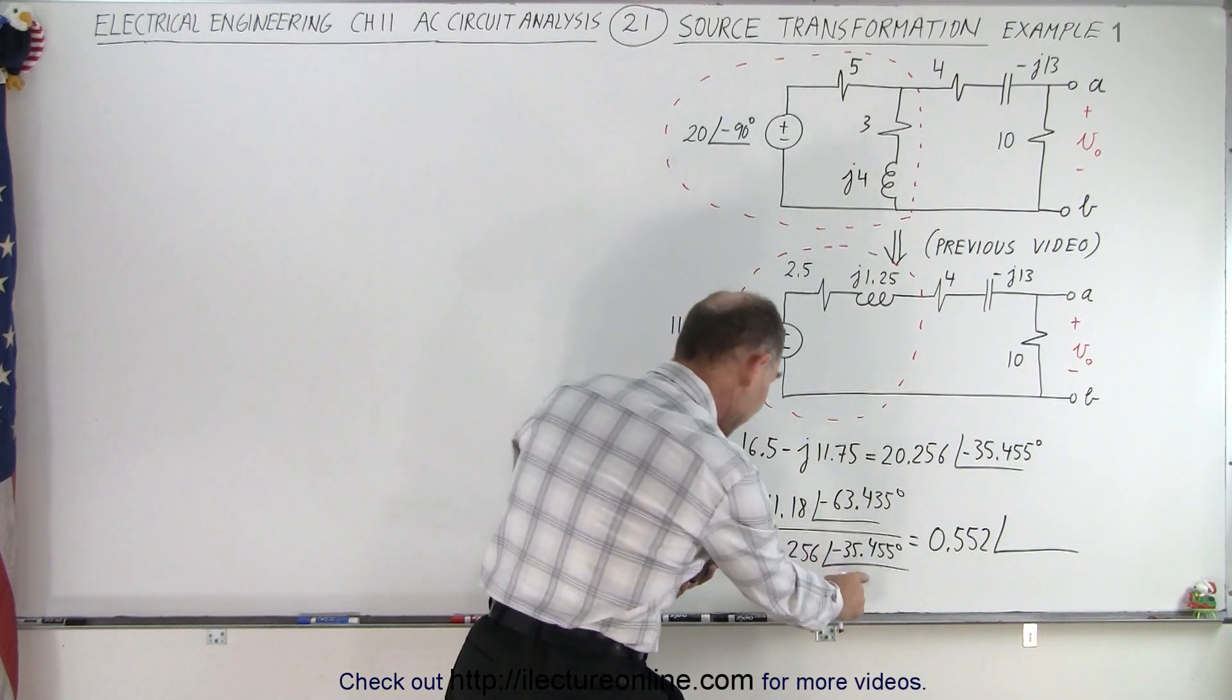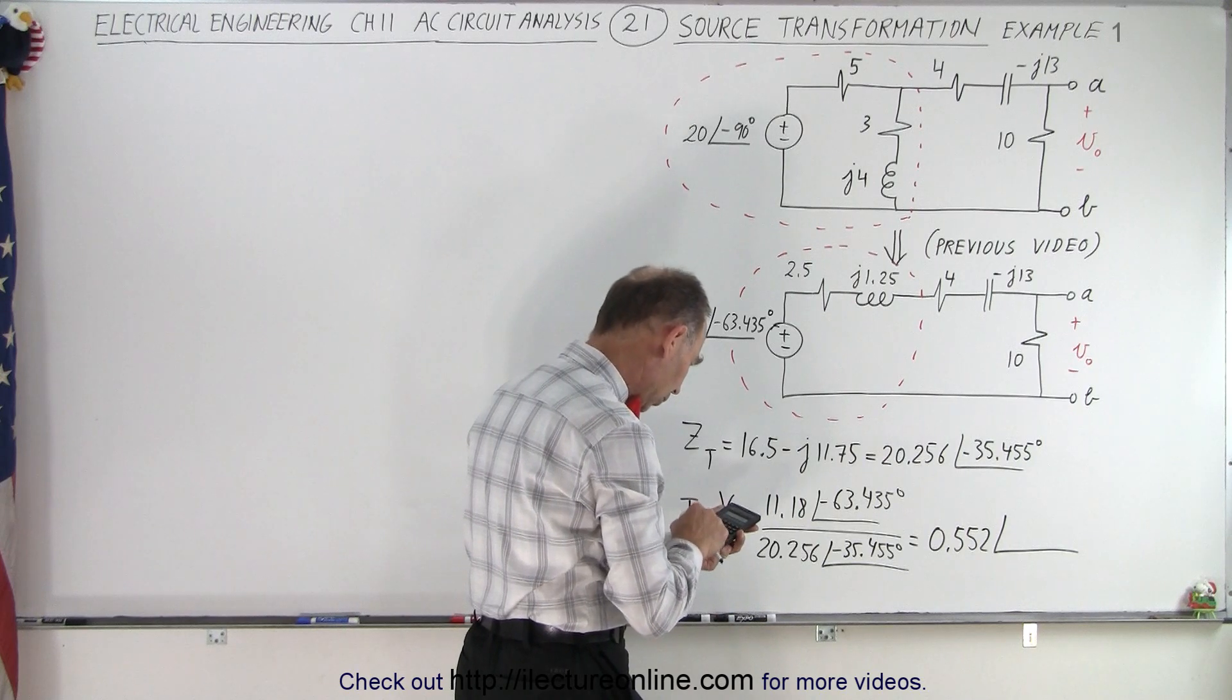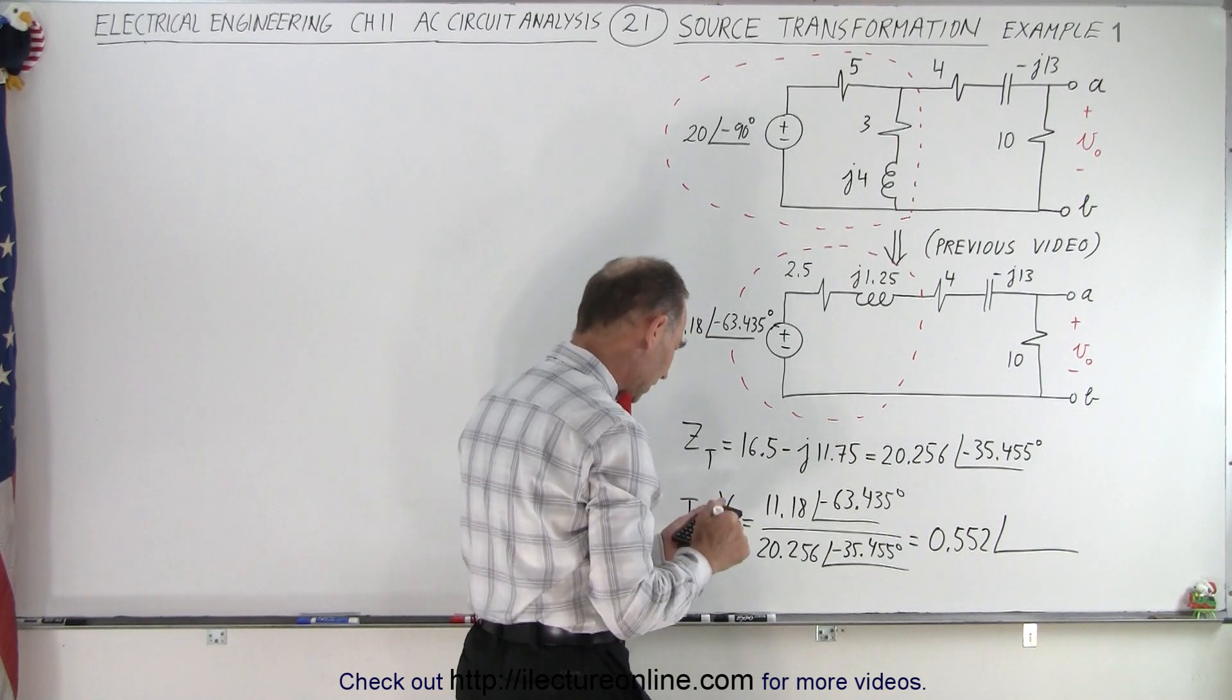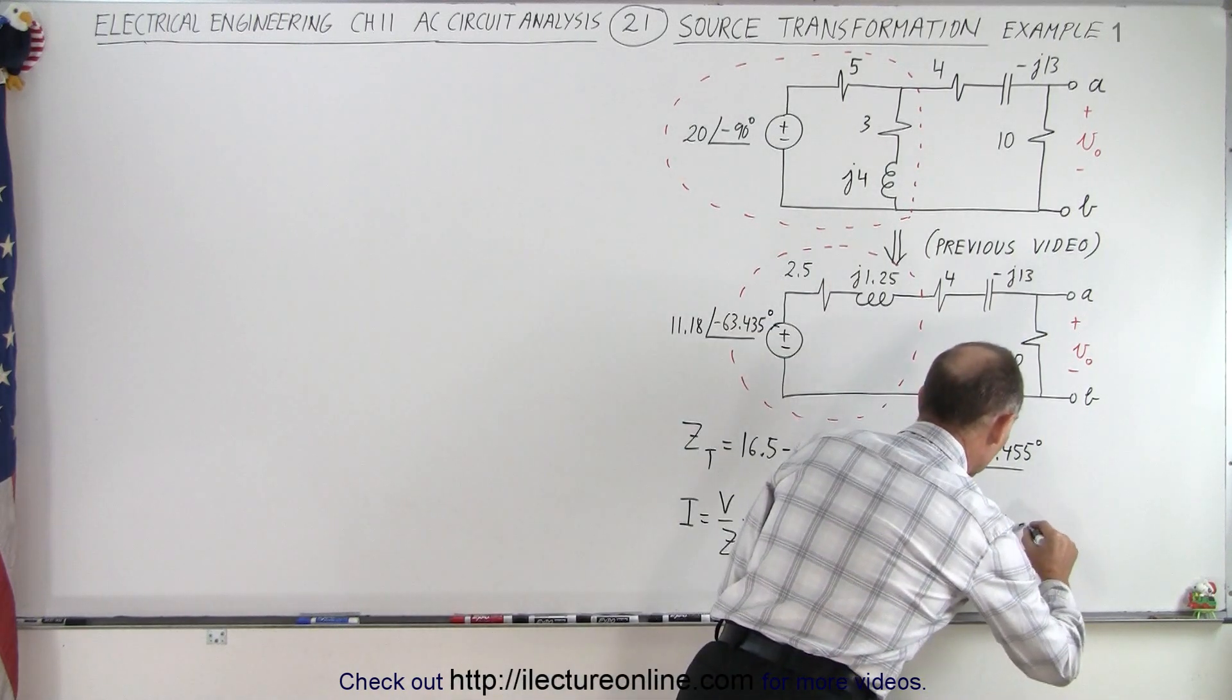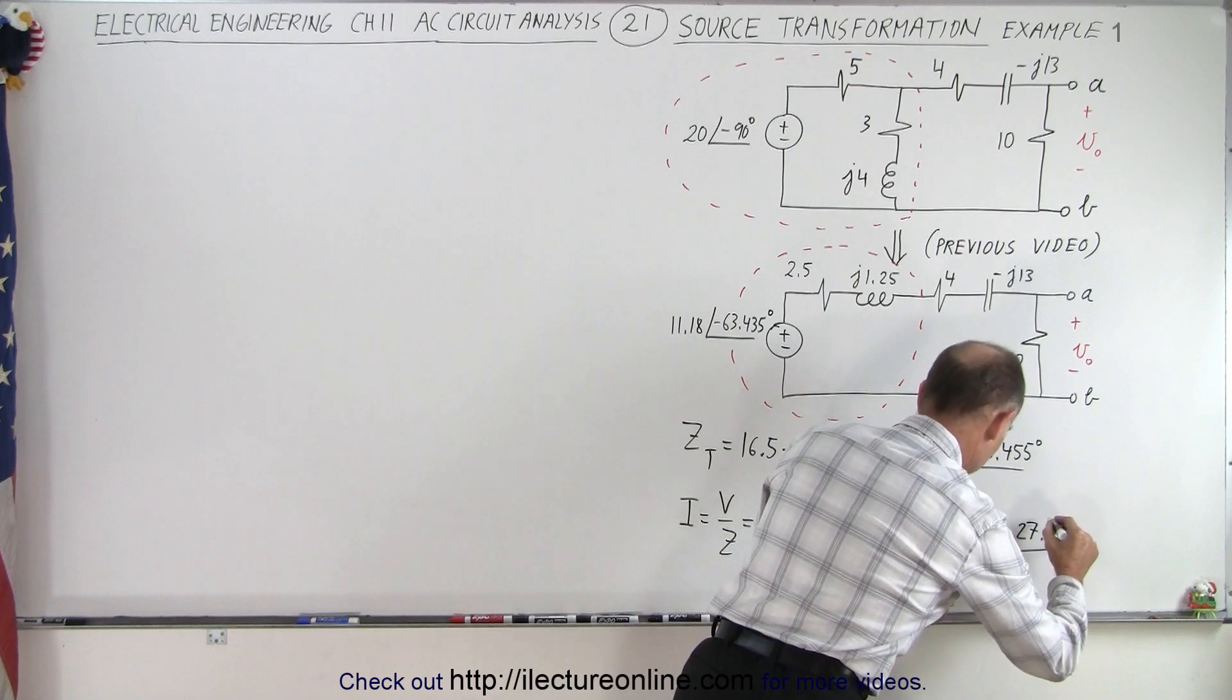with a phase angle of, we have 63.435. And then add this, because we bring it to the top, plus 35.455. So, we have a phase angle of minus 27.98.